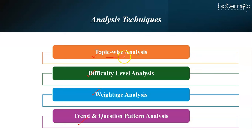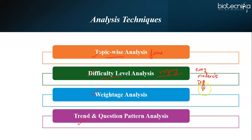For topic-wise analysis, identify the frequently asked topics and focus more on them, allocating your study time accordingly. For difficulty level analysis, analyze the difficulty level of questions in each section and prioritize studying difficult topics, practicing questions of varying difficulty — easy, moderate, and difficult. For weightage analysis, determine the weightage of different topics based on frequency of appearance in previous papers and devote more time to topics with higher weightage. Details about important topics, difficulty levels, and weightage are available in past webinars and YouTube videos on the Biotechnica YouTube channel.